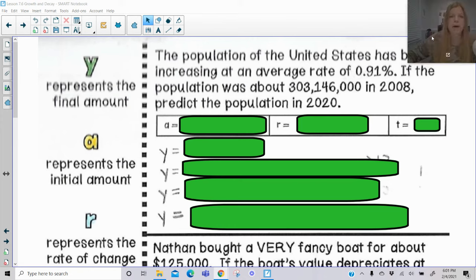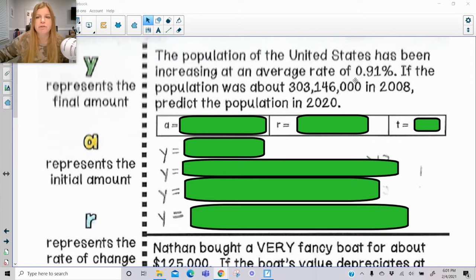It says, the population of the United States has been increasing at an average rate of 0.91%. If the population was about 303,146,000 in 2008, predict the population in 2020. So A represents the initial amount. So the initial amount here is that 303 million number.